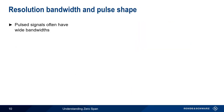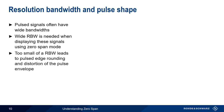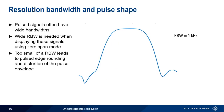Remember that pulse signals, especially those with steep edges and rapid rise times, have relatively wide spectral widths. In order to faithfully represent these pulses in the time domain using Zero-Span, the resolution bandwidth must be set wide enough to capture a significant portion of the pulse signal's power. Too small a resolution bandwidth leads to pulse edge rounding and eventually to distortion of the pulse envelope.